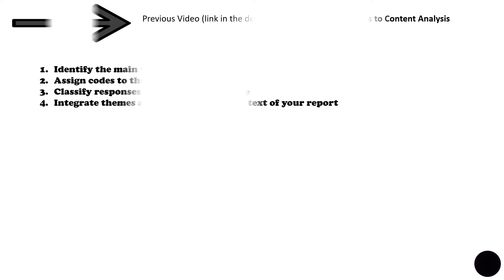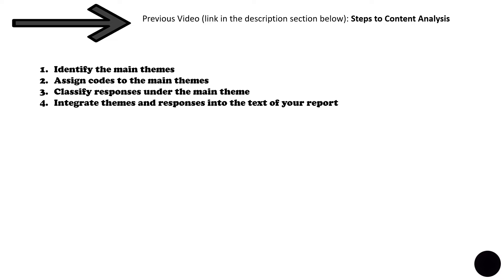Now in my previous video, the link of which is provided in the description section below, I highlighted four steps. These are the four steps normally involved in any kind of data processing in qualitative studies, including content analysis. The four steps included: identifying the main themes, assigning the quotes to the main themes, classifying the responses under the main theme, and integrating the themes and responses into the text of your report. In today's video, I will highlight how these four steps are conducted.